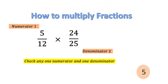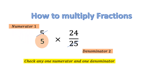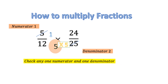Now let's do one thing: let us strike 5 and 25. This is called cancellation — we strike the numerator and denominator that have a common factor. We ask: 5 multiplied by how much is 5? 5 times 1 is 5, so we write 1 here. And 5 multiplied by how much is 25? 5 times 5 is 25, so we write 5 here.